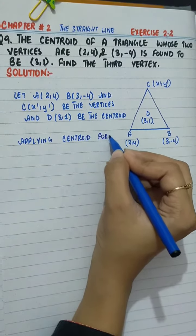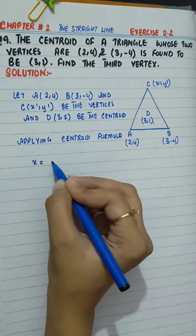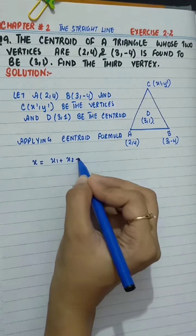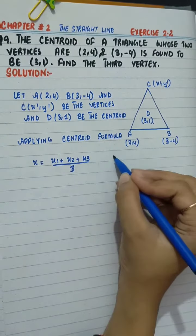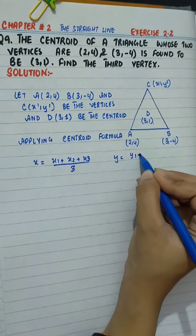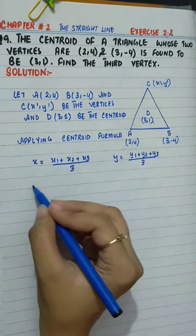Applying centroid formula: x = (x₁ + x₂ + x₃)/3 and y = (y₁ + y₂ + y₃)/3.